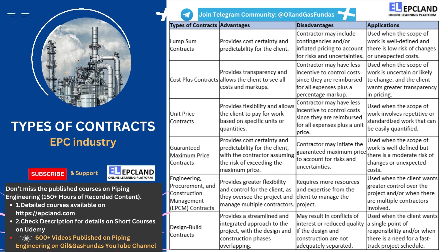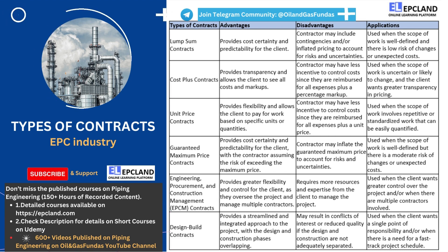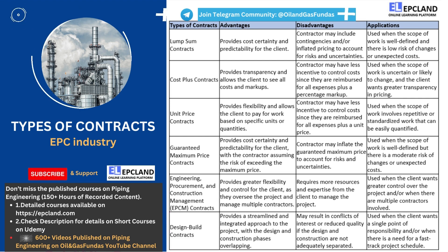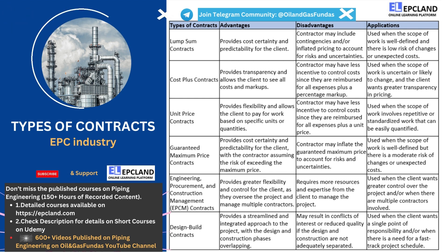However, there are also some potential disadvantages to cost plus contracts. Because the contractor is reimbursed for all expenses plus a percentage markup, they may have less incentive to control costs. This can result in higher overall costs for the client. Overall, cost plus contracts are best suited for projects with an uncertain scope of work or a high risk of changes. They can provide greater transparency in pricing, but may result in higher overall costs if the contractor does not effectively manage costs. As with any type of contract, it is important to carefully consider the specific terms and conditions of a cost plus contract before entering into it.